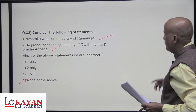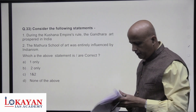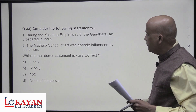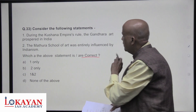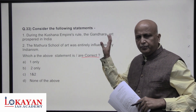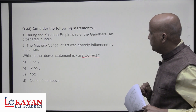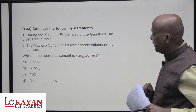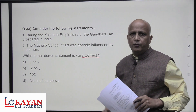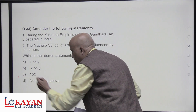During the Kushana Empire, the Gandhara art prospered in India — true. The Mathura school of art was entirely influenced by Indianism — true; it wiped out foreign influence and brought Indianness into art. Both statements one and two are correct — answer is C.